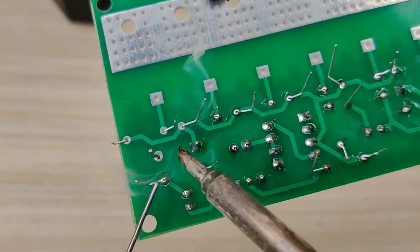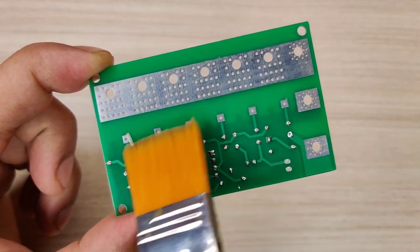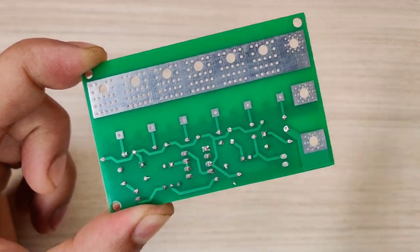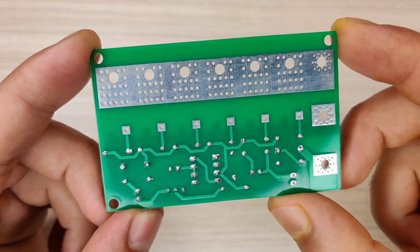And after spending some time with the soldering process I cleaned the PCB with isopropyl alcohol and here our PCB is looking nice and clean.